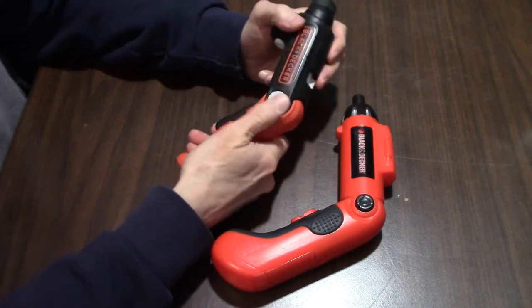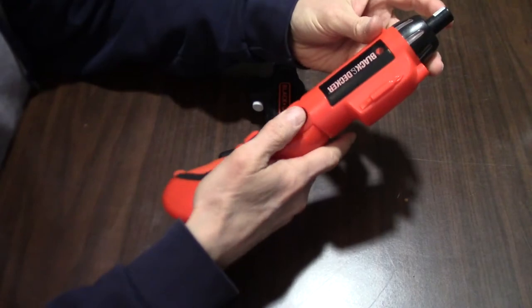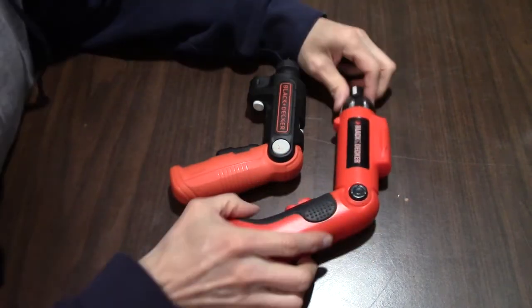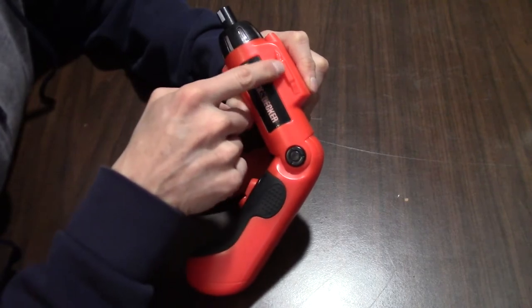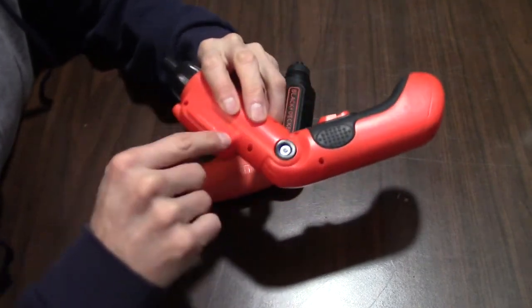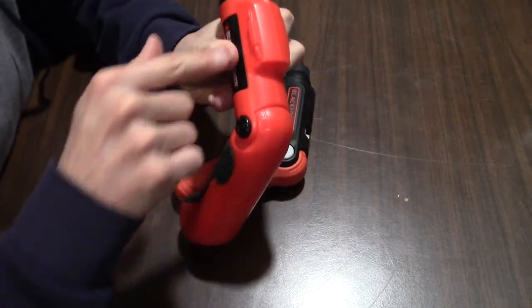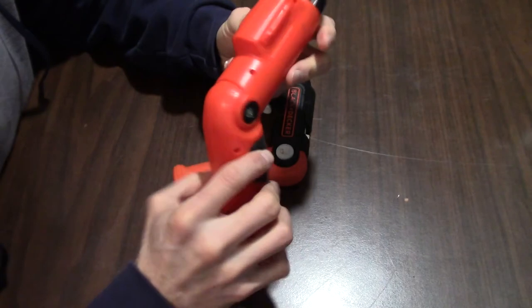They both have three position handles. This one has a feature where you can store the bits, but it's just a fake bit there on each side. Both happen to be a Phillips-slotted combination.